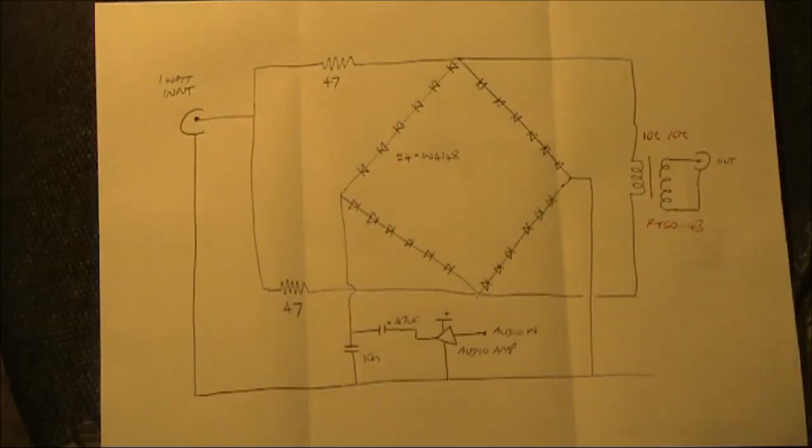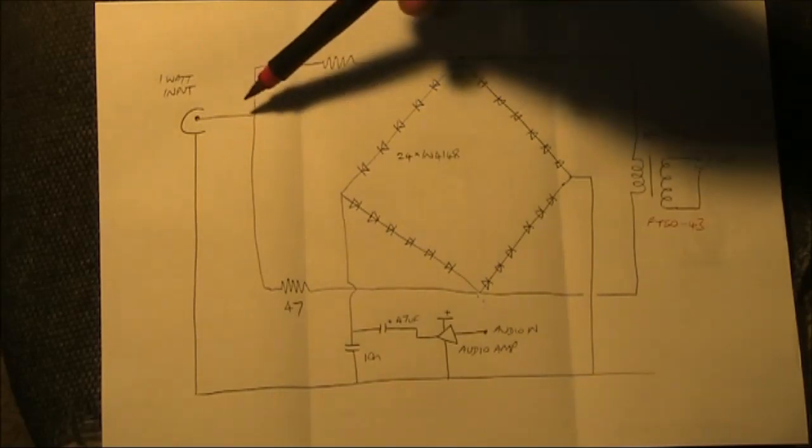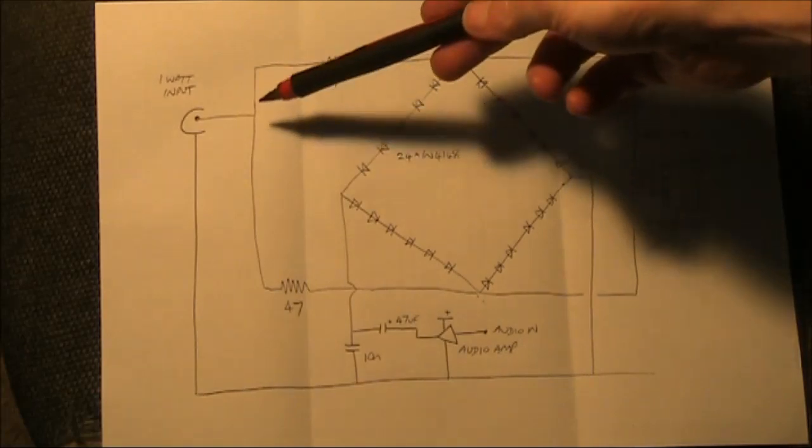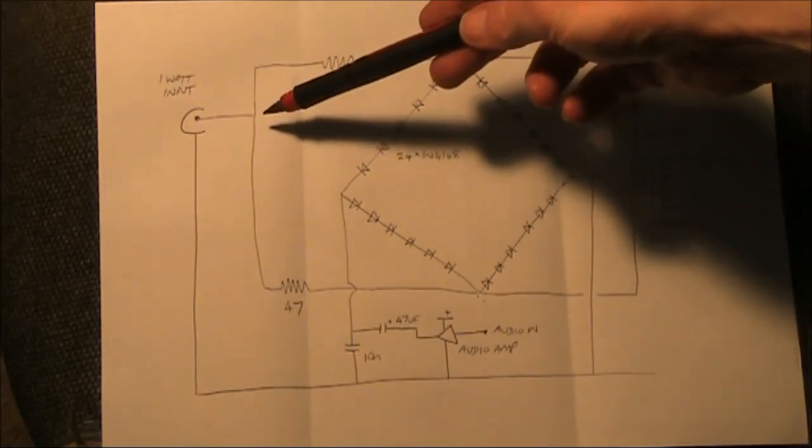Here is the circuit. All those diodes make it look a lot more complicated on paper than it does in reality. The one watt signal comes in on 7 MHz, and normally here you'd have a balance potentiometer of, say, 100 ohm. Instead, I just used two 47 ohm resistors.